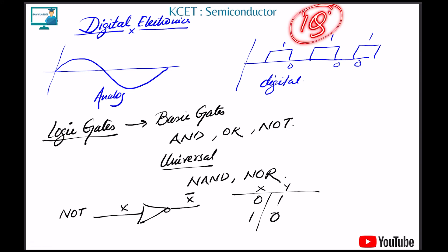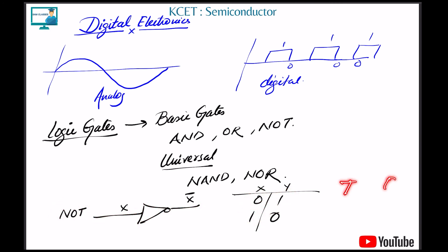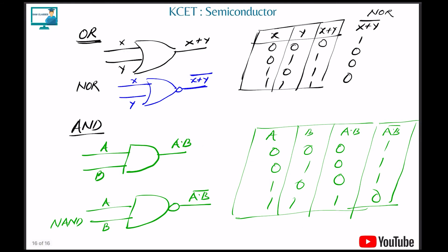Earlier everything was analog; now everything is digital. Digital is basically zero and one. Computers understand only yes or no. We use logic gates to convert every decision into yes/no form. The basic logic gates are AND, OR, NOT, and universal gates NAND and NOR. The NOT gate has one input and one output — it inverts: a true input returns false, a false input returns true. It is also called an inverter gate.